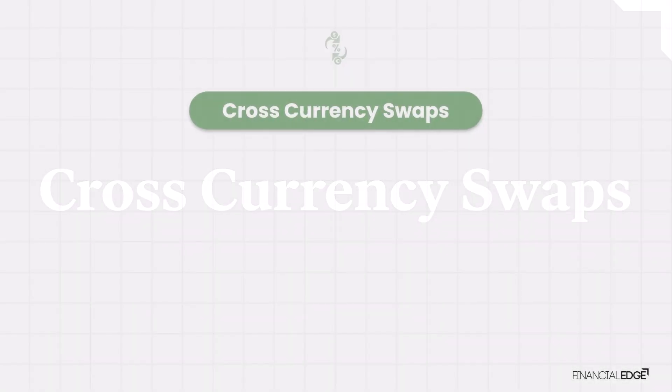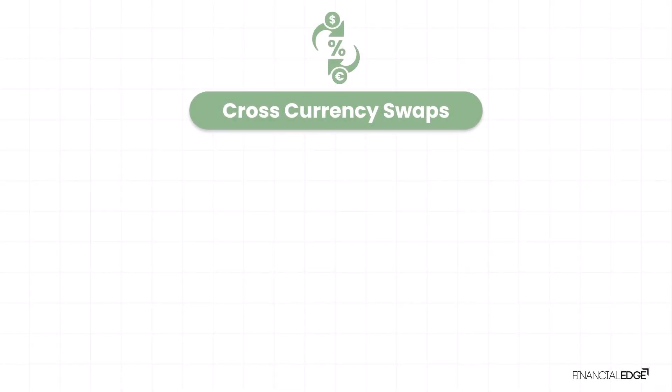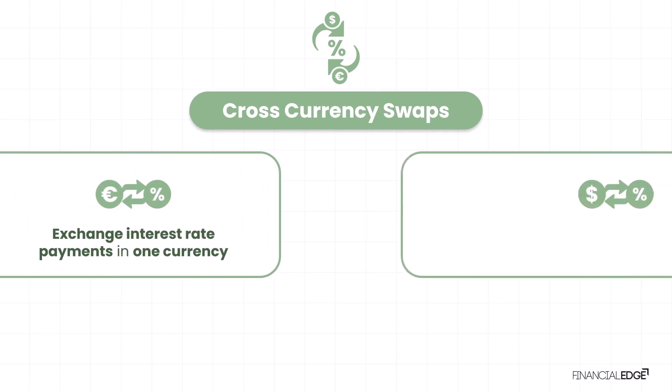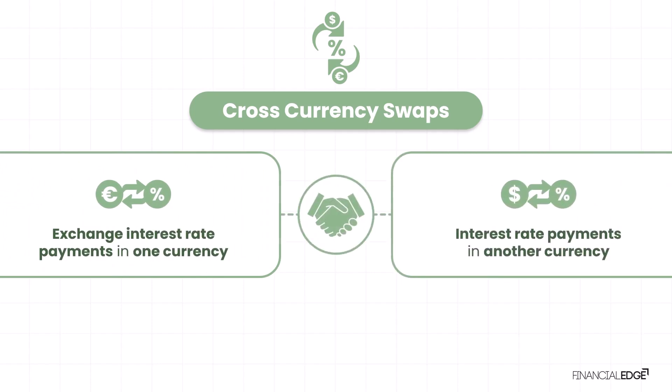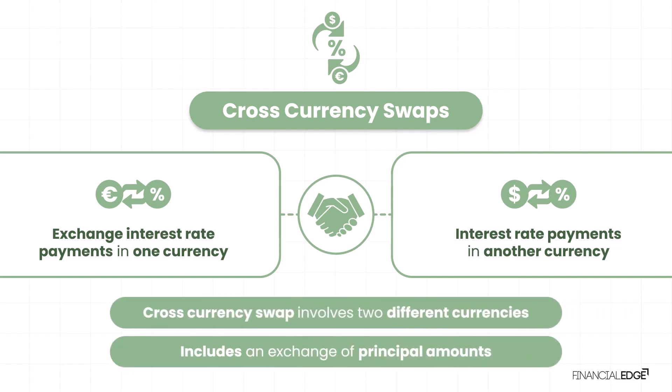A cross currency swap is an agreement between two parties to exchange interest rate payments in one currency for interest rate payments in another currency. Unlike a standard interest rate swap where both payments are in the same currency, a cross currency swap involves two different currencies and includes an exchange of principal amounts.